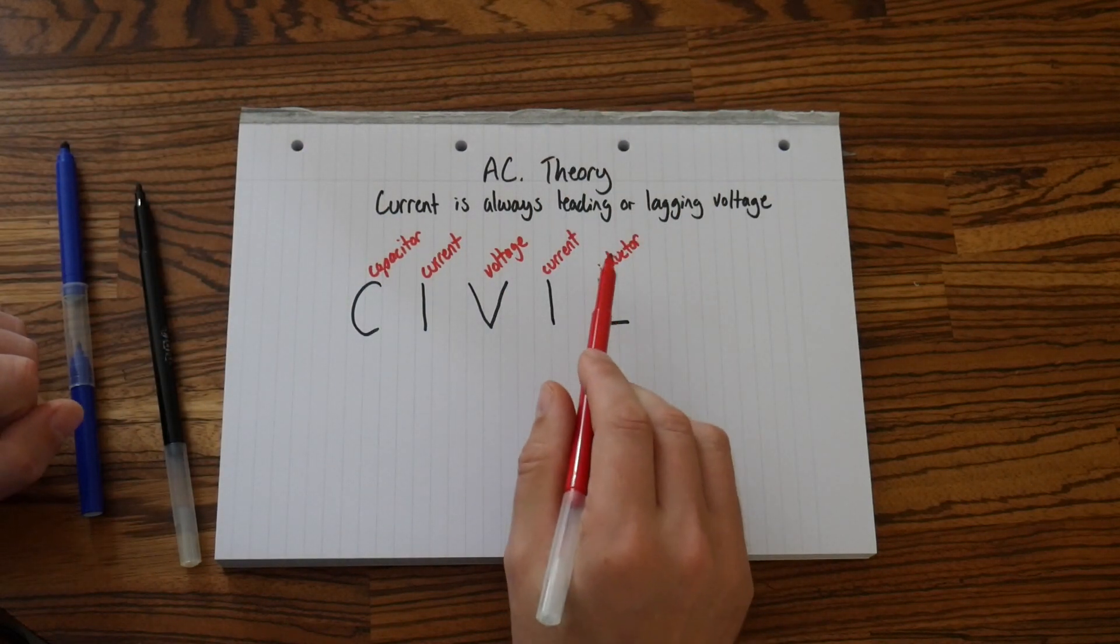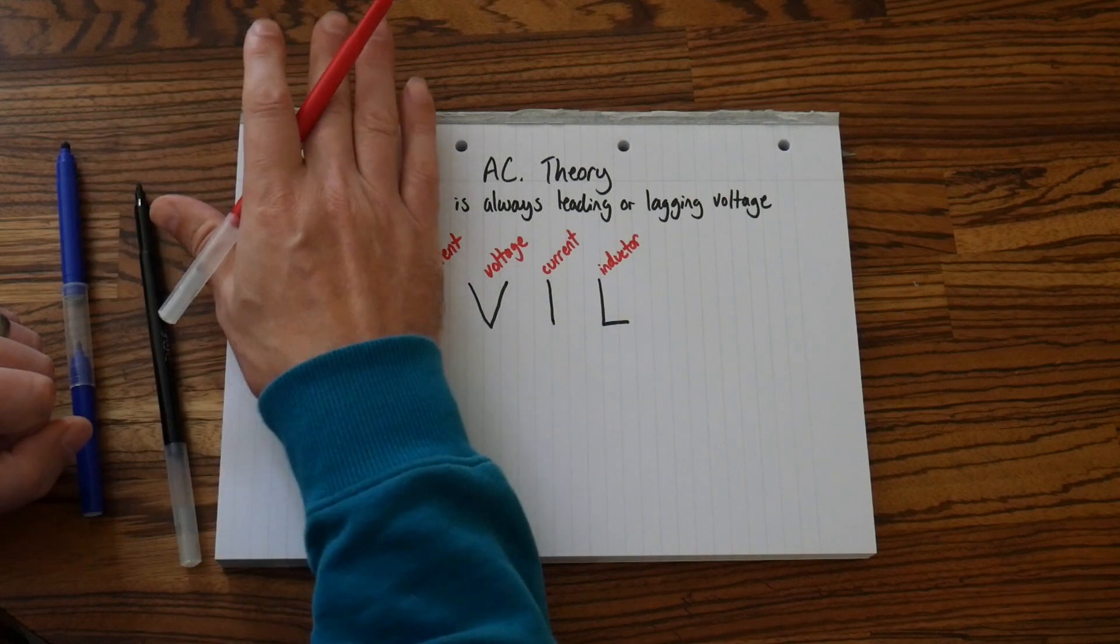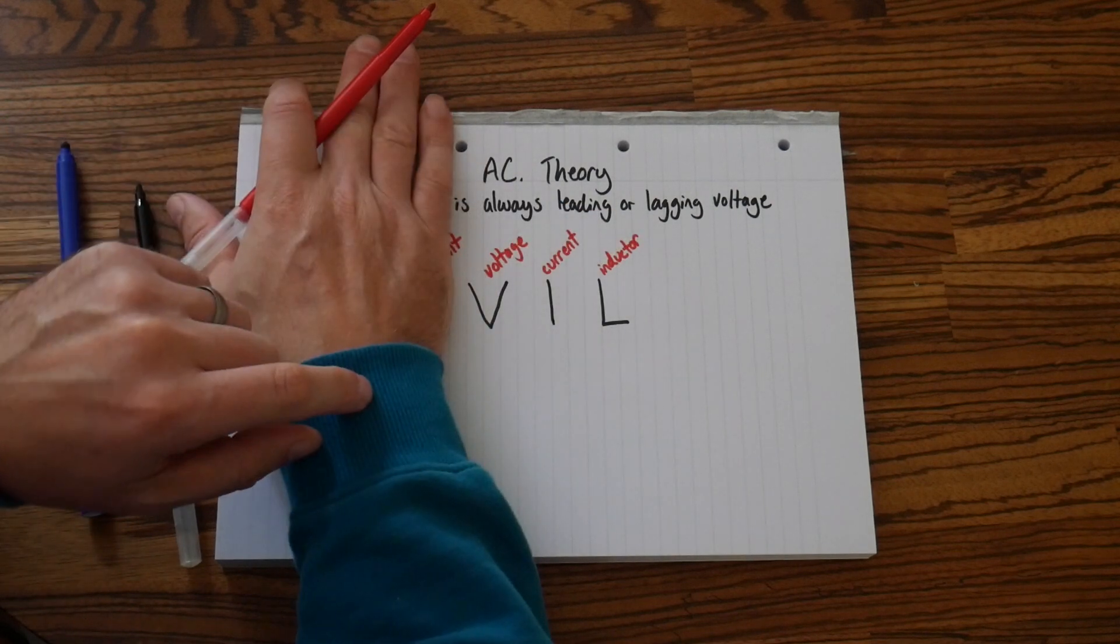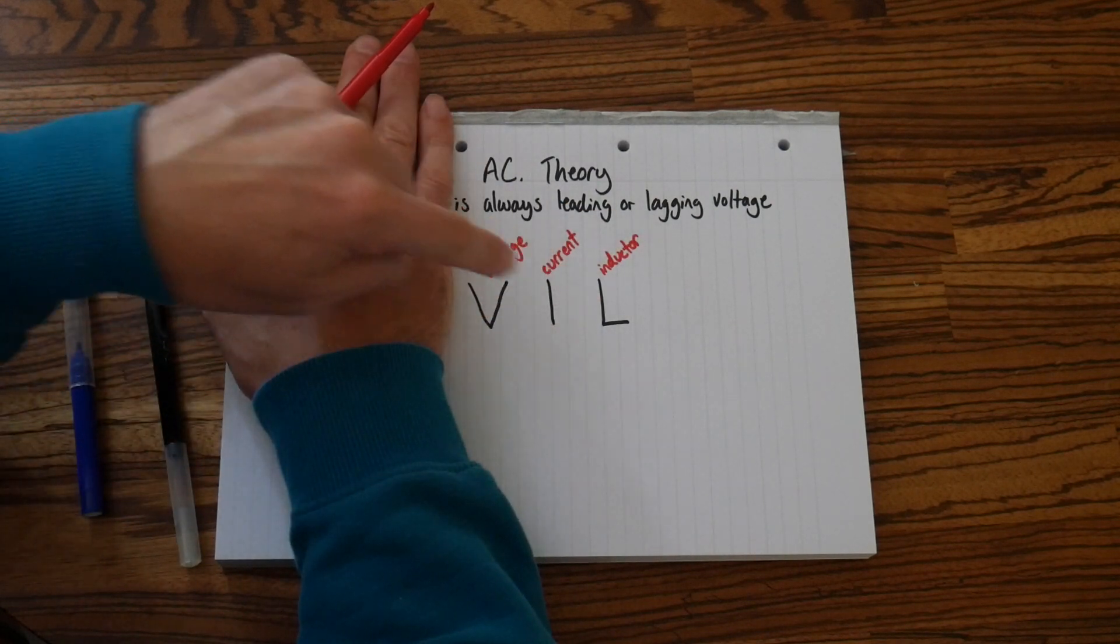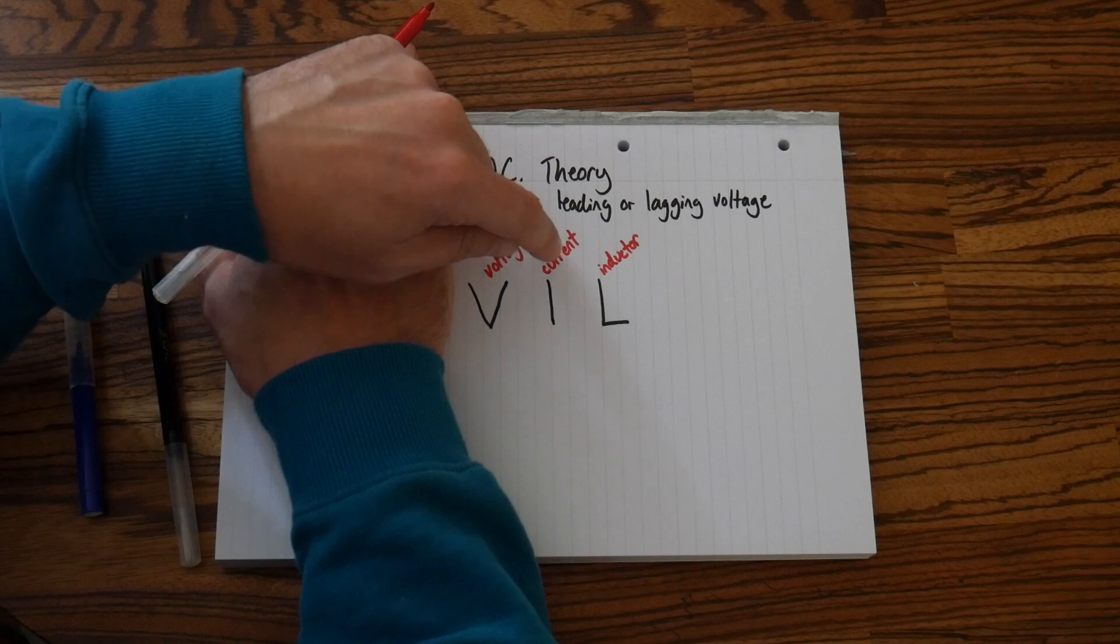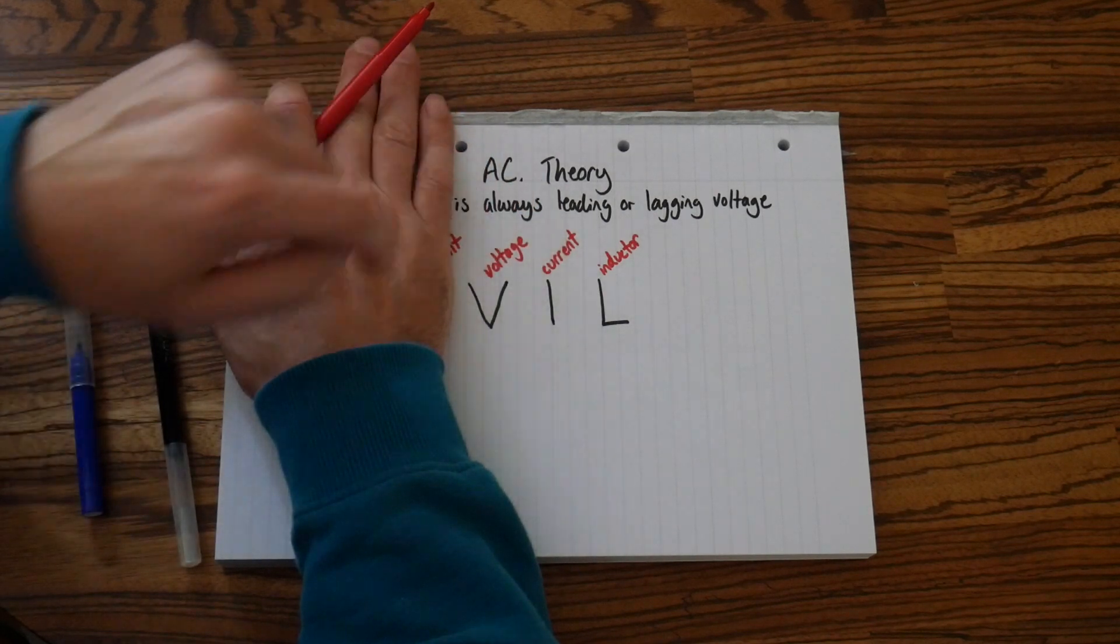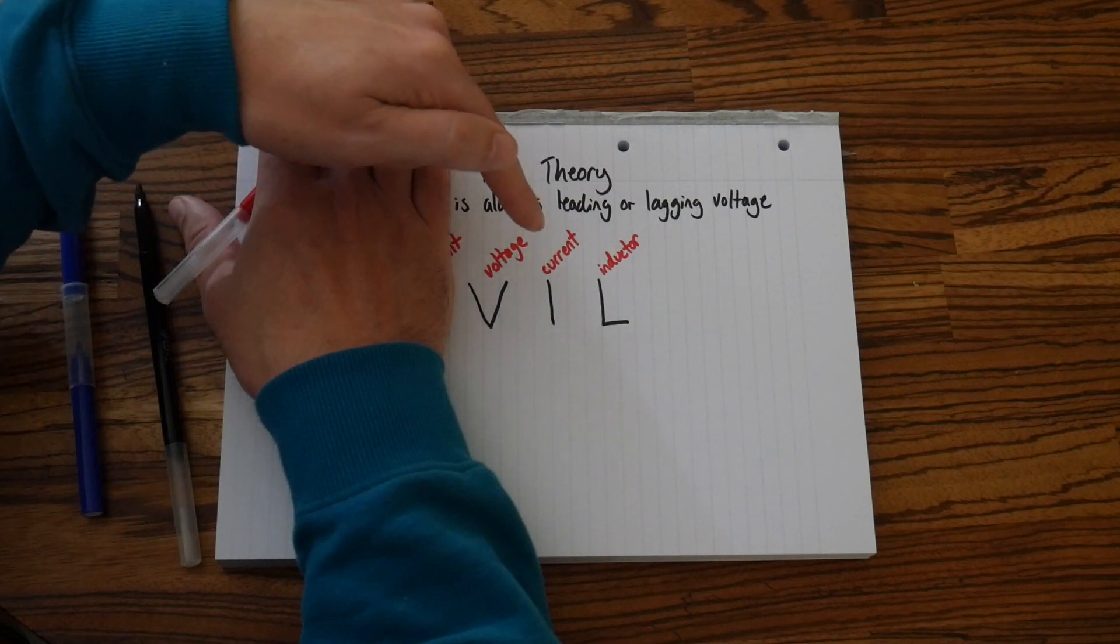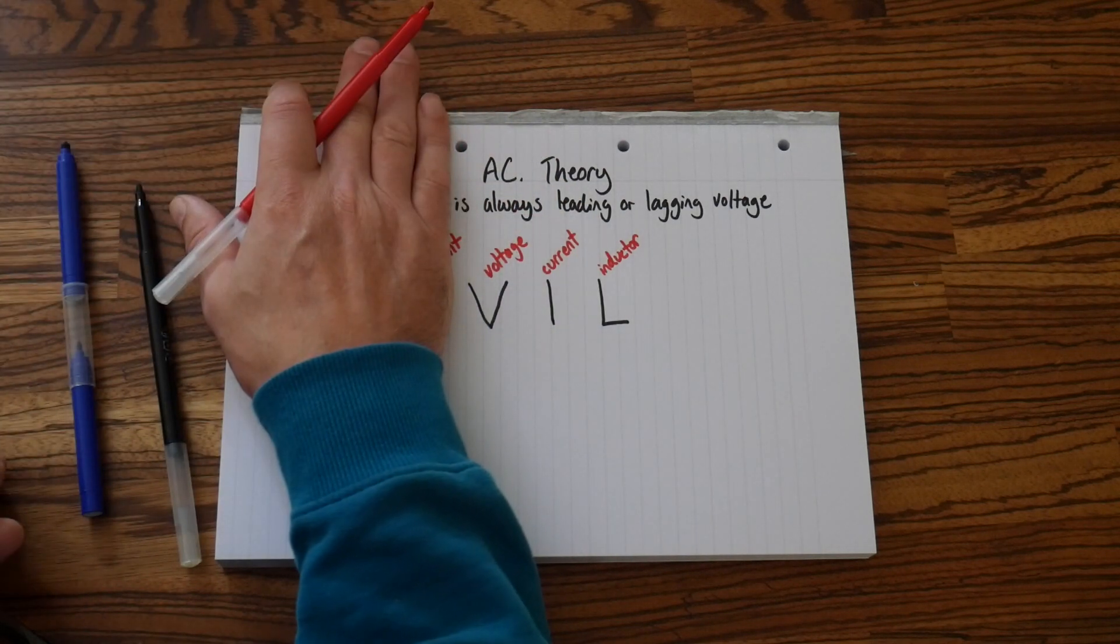And if I had a purely inductive circuit, I'll just cover up this side. So I've got voltage, current, and inductor. And you'll see, just in the words here, the word current comes after the word voltage. So in an inductive circuit, current lags voltage.